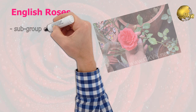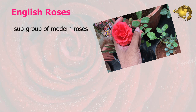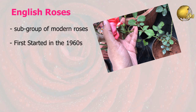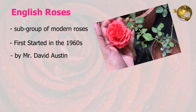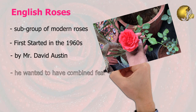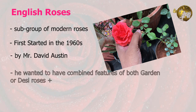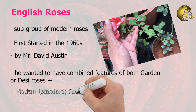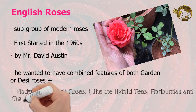English Roses are actually a subgroup of Modern Roses and not an official class of roses. English Roses were first started in the year 1969 by British breeder Mr. David Austin, and hence they are also sometimes called Austin Roses or David Austin Roses. Mr. Austin wanted to create rose bushes that would combine the best features of the Old Garden Roses and the Modern Roses like the Hybrid Teas, Floribundas, and Grandiflora.